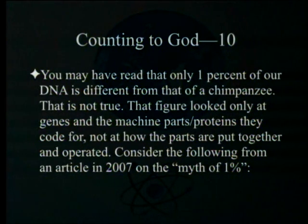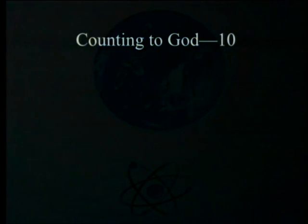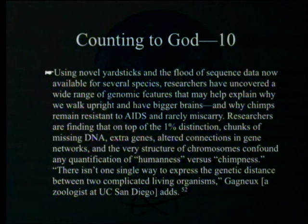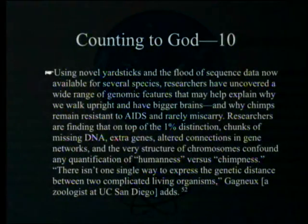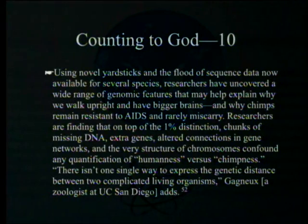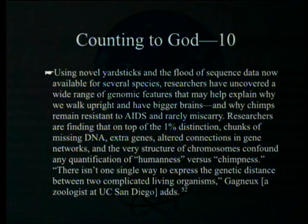You may have read that only 1% of our DNA is different from that of a chimpanzee — that is not true. That figure looked only at genes and the proteins they code for, not at how the parts are put together and operated. Using novel yardsticks and the flood of sequence data now available, researchers have uncovered a wide range of genomic features that may help explain why we walk upright and have bigger brains, and why chimps remain resistant to AIDS. On top of the 1% distinction, chunks of missing DNA, extra genes, altered connections in gene networks, and the very structure of chromosomes confound any quantification of humanness versus chimpness.